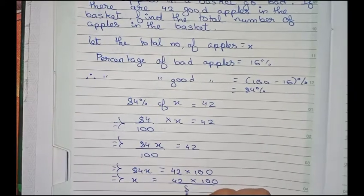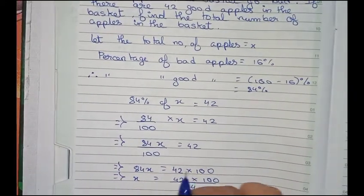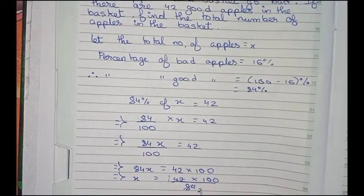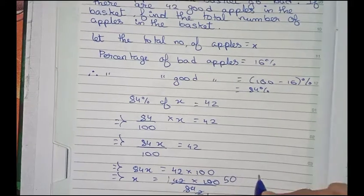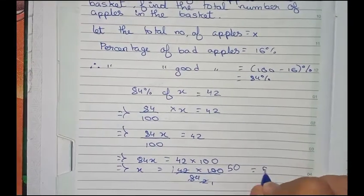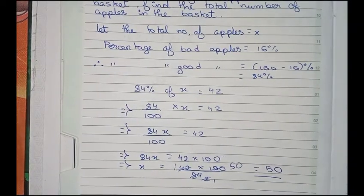We are taking 84 to this side so it goes for division. So diagonally cut 42 and 84, divide by 2. Now 2 and 100, so it equals to 50. So 50 is our final answer and it is the total number of apples in the basket.